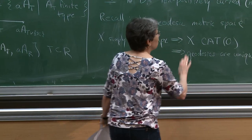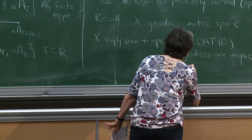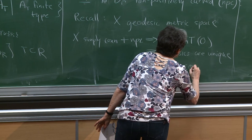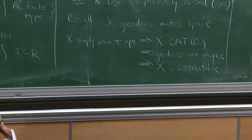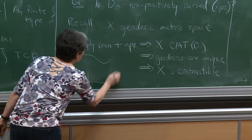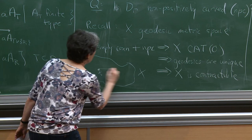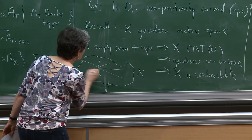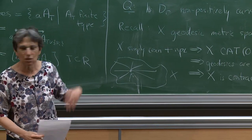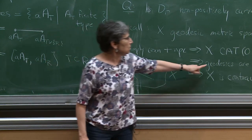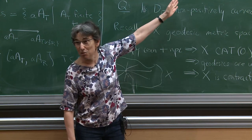If it's CAT(0), geodesics are unique. And once geodesics are unique, X is contractible. If I have any space X where geodesics are unique, I can pick any base point — there's a unique path to any other point — and I can just contract the space along those paths. So it's general nonsense about CAT(0) geometry: once you have CAT(0), you automatically have contractibility.